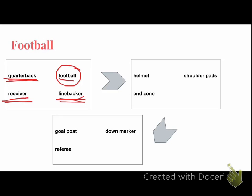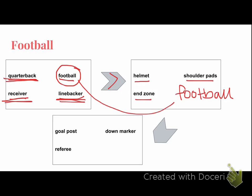What happens to football is it moves over to the next group. So now we have four new terms and we're going to do the same thing — we're going to look at all four and bump one. The new terms are helmet, shoulder pads, end zone, and football.